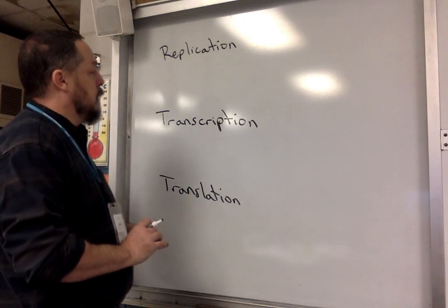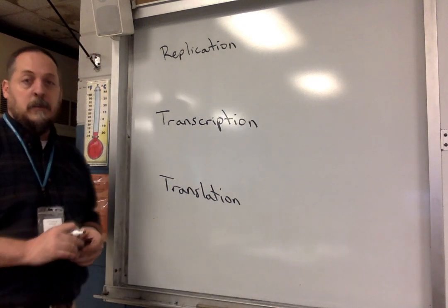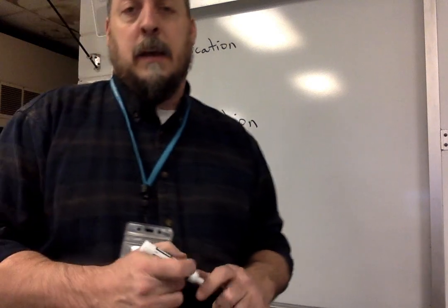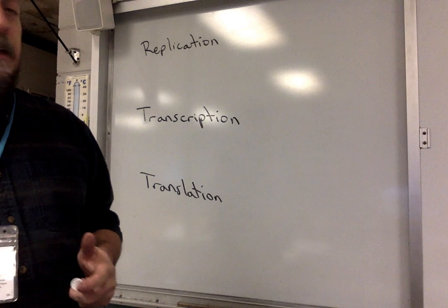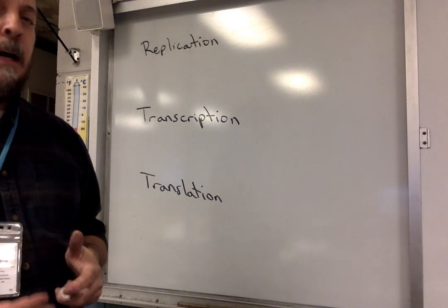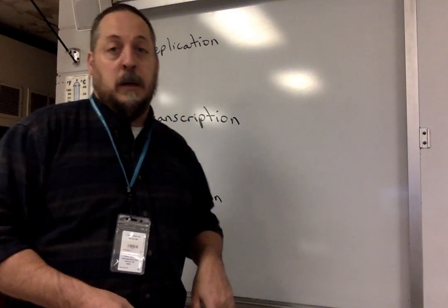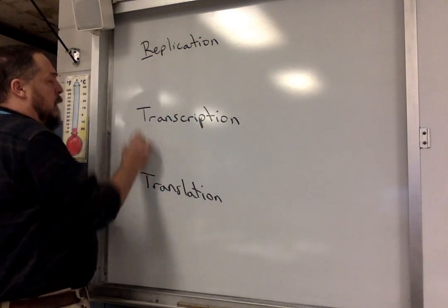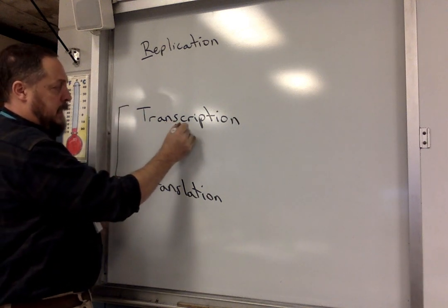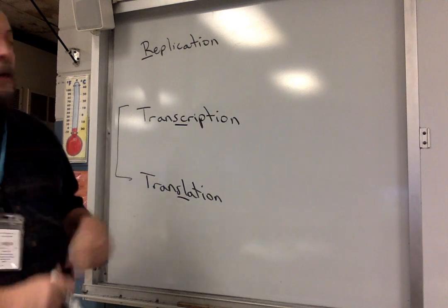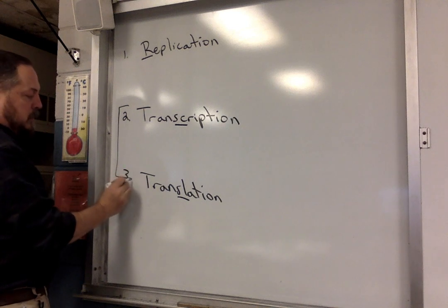To understand this we need to know these three terms, and here's a trick: take the three words and put them in alphabetical order. R comes before T, and SC comes before SL. So in alphabetical order, replication is the first step, transcription is the second step, and translation is the third step.